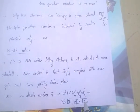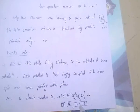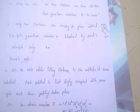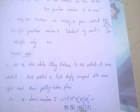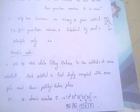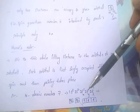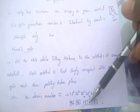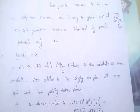According to Hund's Rule, the electrons are first singly occupied in each orbital — each orbital gets one electron first — and then pairing takes place. That means, while filling electrons in the orbitals of the same subshell, each orbital is first singly occupied with the same spin, and then pairing takes place.